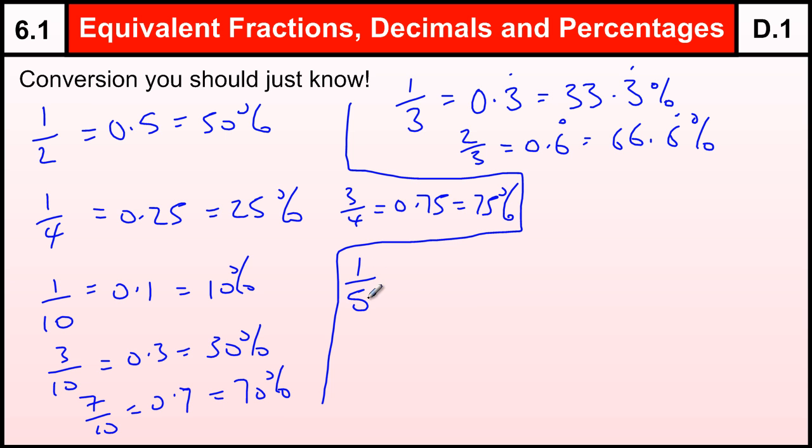Another one that people tend not to know, but should definitely know, is 1 fifth. Now, 1 fifth is equal to 2 tenths. It's an equivalent fraction. So, you should be able to do a fifth, because if you can do tenths, we can do fifths, because each fifth is 2 tenths.